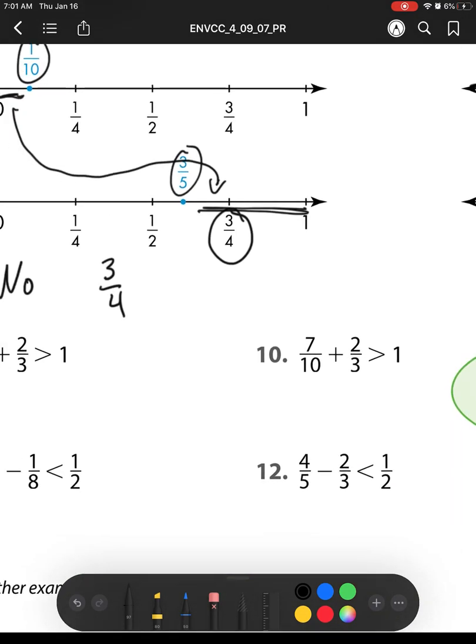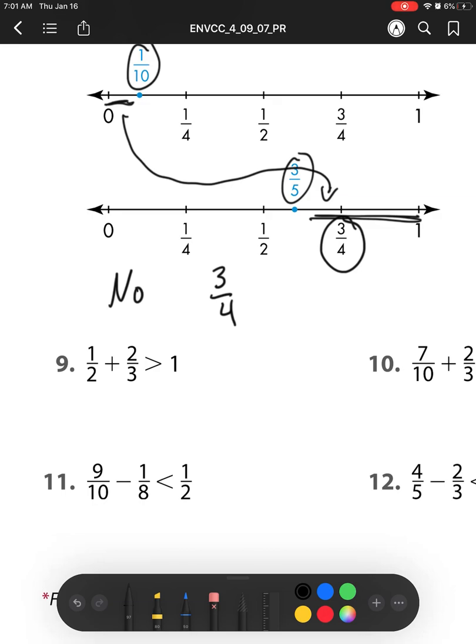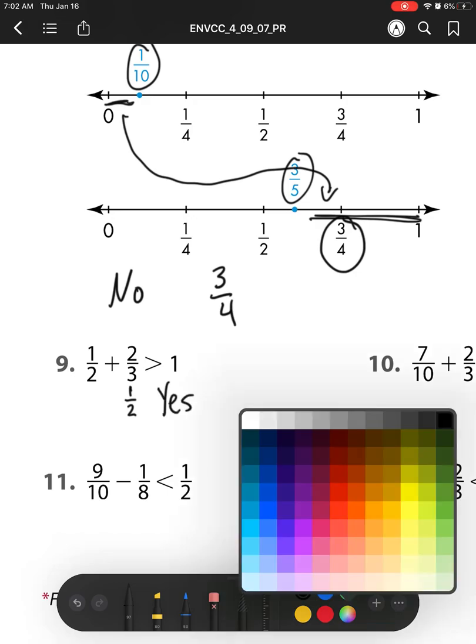Heading off to number 9. Again, we're just checking to see if they're reasonable or not. I have 1 half plus 2 thirds. Well, I know 2 thirds is a little bit more than 1 half. So I'm saying 1 half plus something bigger than 1 half is going to be bigger than 1 whole. So that one is yes, it is reasonable.